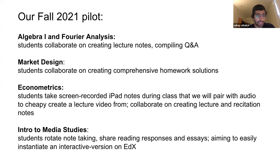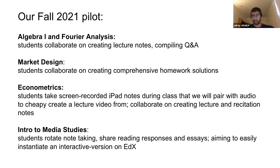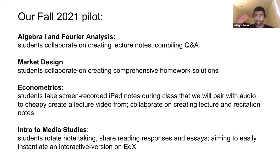In Market Design, students are collaborating on creating a set of comprehensive homework solutions. The TA solutions offer one way of solving a problem, but that doesn't always detail out all the ways of solving it — which can be really helpful, especially if students have different approaches. So these students are looking at all their solutions and the staff solution and making one set of solutions that incorporates all these different approaches. We're also emphasizing not skipping steps, because people learning on OCW don't have a TA — if they don't understand some step, they'll just get stuck.